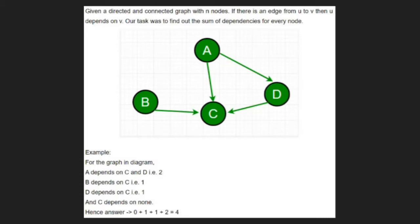Our task is to find the sum of dependencies for every node. For the graph in the diagram, a depends on c and d i.e. it depends on two vertices. b depends on c, d depends on c and c depends on none.